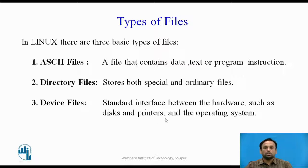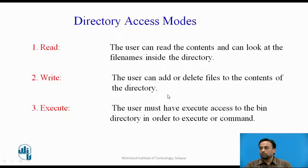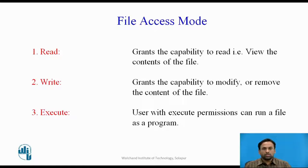Now we will see the access modes for files and directories. For files, there are three access modes: read, write, and executable. When there is only read permission, it grants the capability to read — you can just view the content of the file but cannot modify it.